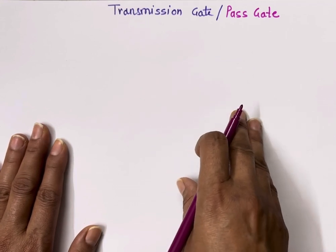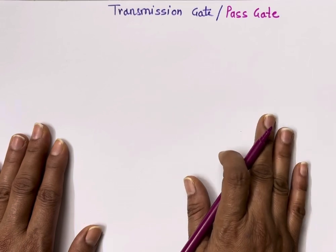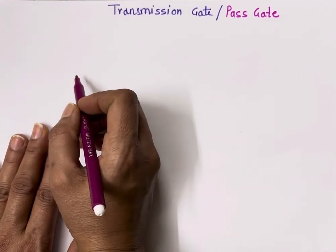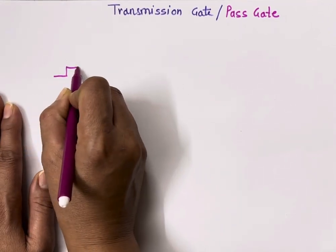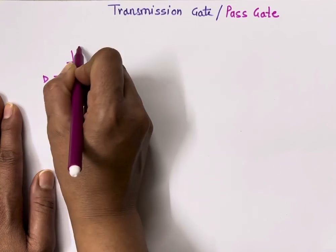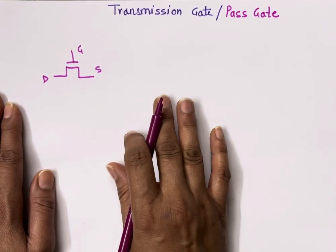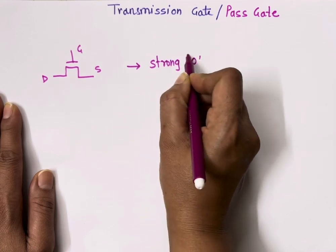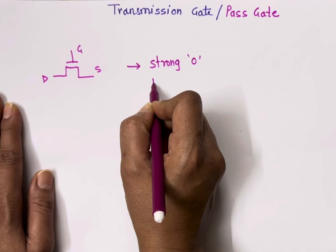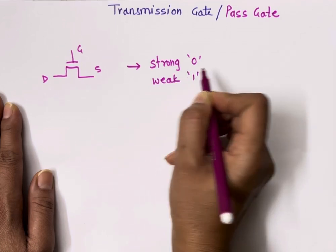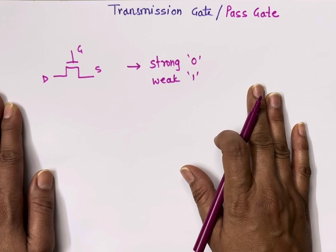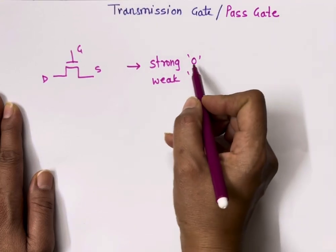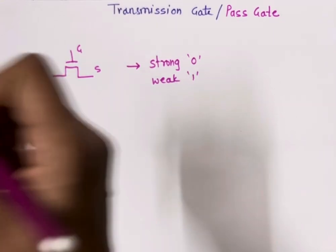In VLSI design or circuit design, we use P-channel MOSFET and N-channel MOSFET. This is the symbol of N-channel MOSFET — drain, gate, and source. When we use N-channel MOSFET, it gives us a strong value of zero and a degraded or weak value of one. That is why we always connect N-channel MOSFET in the pull-down network, because it gives us a strong value of zero.